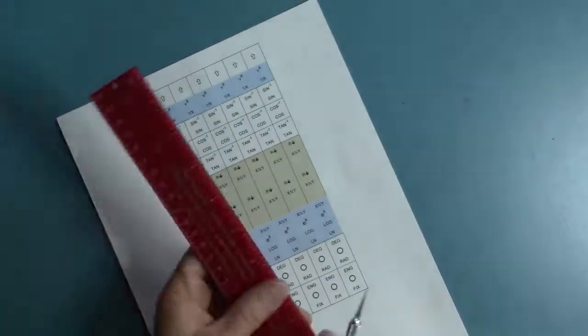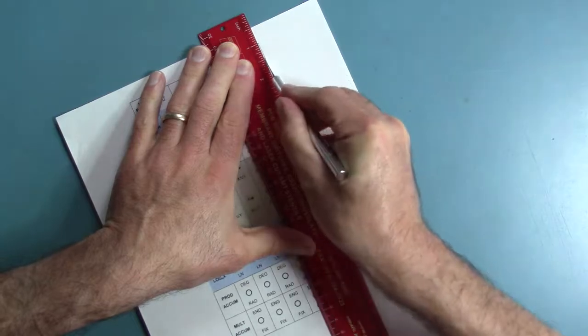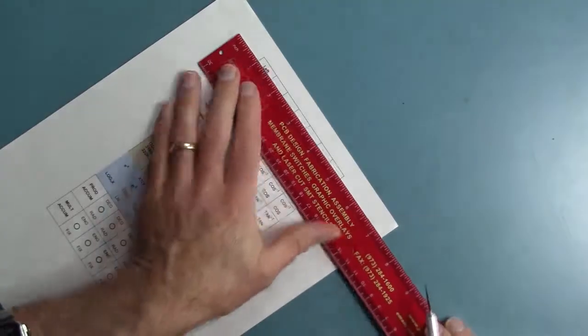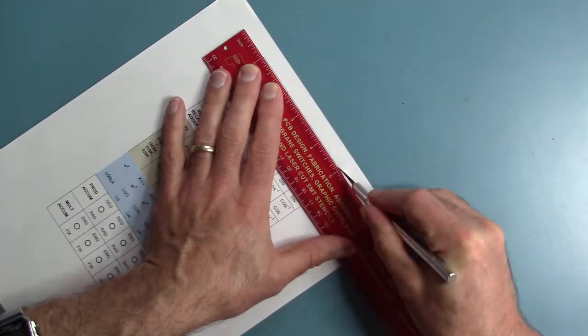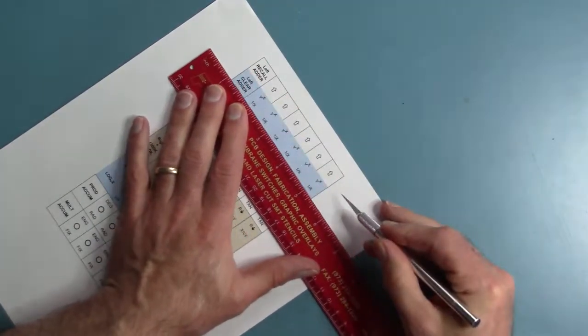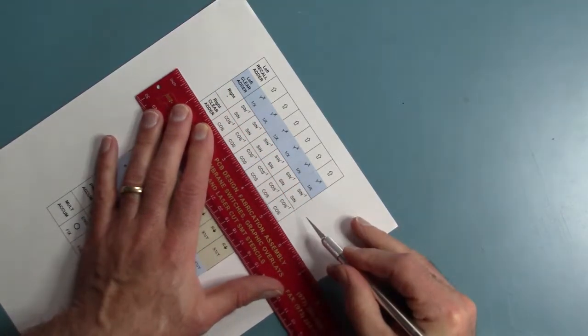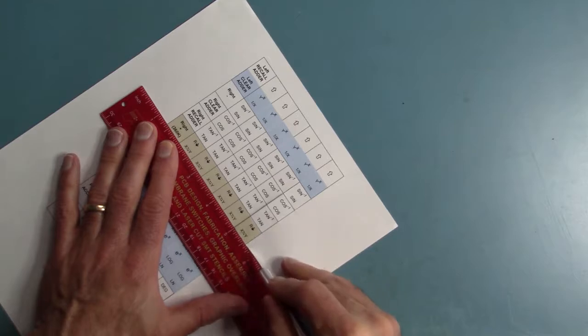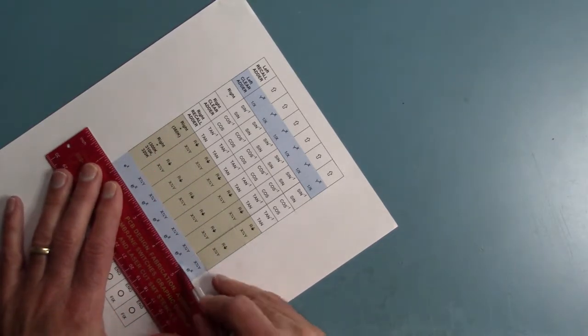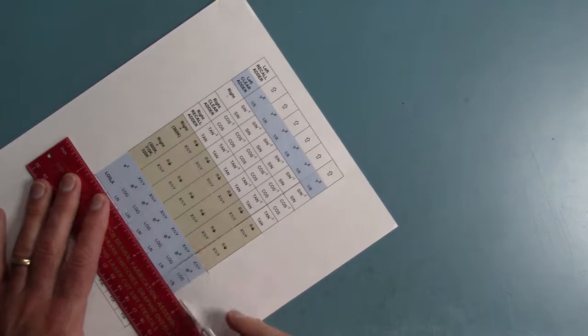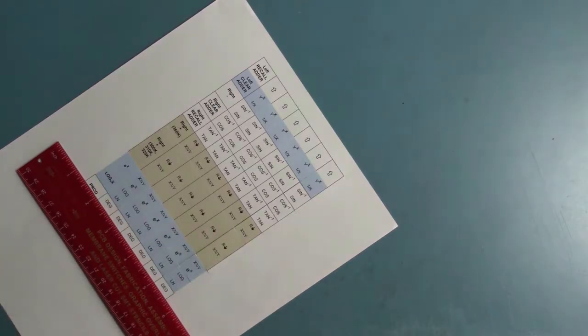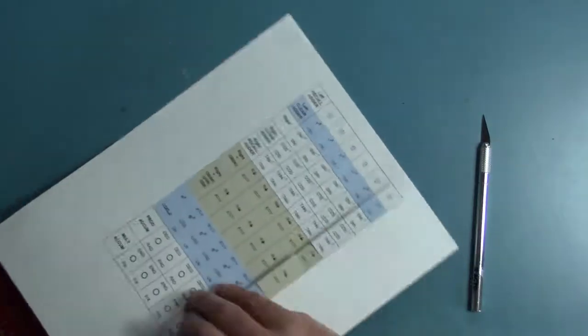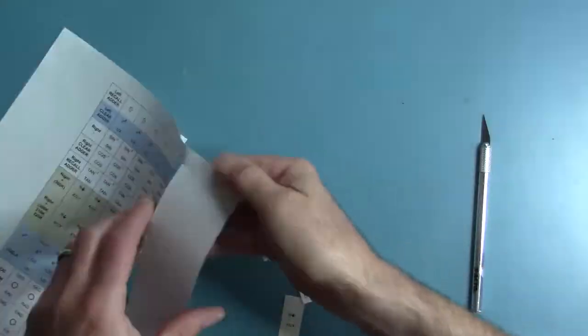The key labels come on an adhesive label sheet. You need to cut them apart. There are lots of extras in case you make a mistake. Since there are adhesive labels, you have a choice. You can peel them off and stick them on the plastic caps, or you can disassemble the keyboard, remove the plastic caps, and put the new labels in them. You can just lay them on top of the old labels so that you don't lose the old labels. But if you do this, don't peel off the adhesive back. You don't want them to stick to the old labels and damage them. So I recommend using an X-Acto knife to cut all the way through the adhesive sheet.